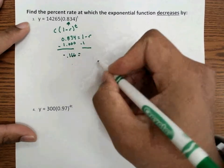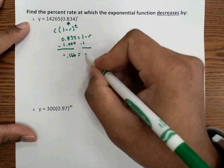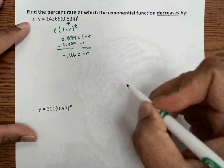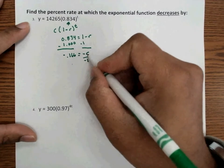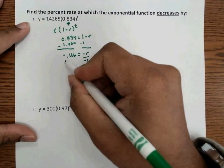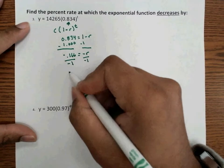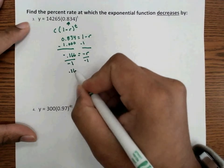So we get negative 0.166. And then 1 minus 1 is 0, and we have a negative r. And so the last thing we have to do is divide by negative 1, because we have to get r completely by itself.